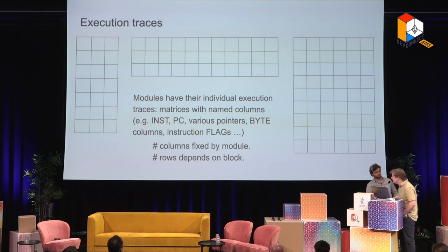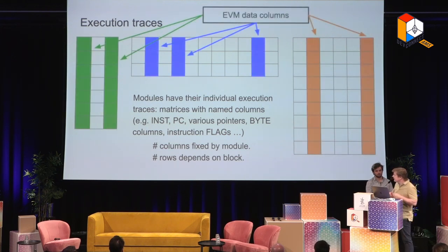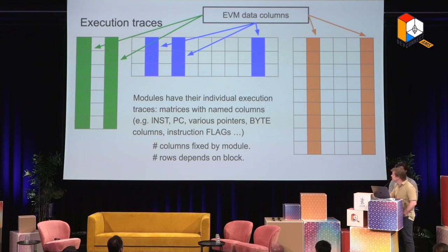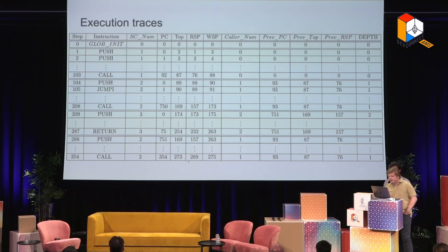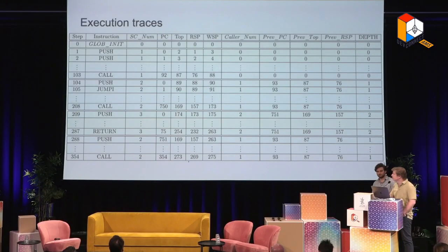Execution traces are basically big matrices. The number of columns is fixed and depends on the module; the number of rows depends on the block being executed. Only a tiny fraction of these columns contain data extracted directly from the execution engine — the remainder is populated by us in the ZK EVM. Here's a snippet of what you might imagine for the main execution trace. Some of these columns probably make sense to most of you, like the instruction column that lists the sequence of instructions, or the program counter and stack pointer columns that refer to positions on the stack.